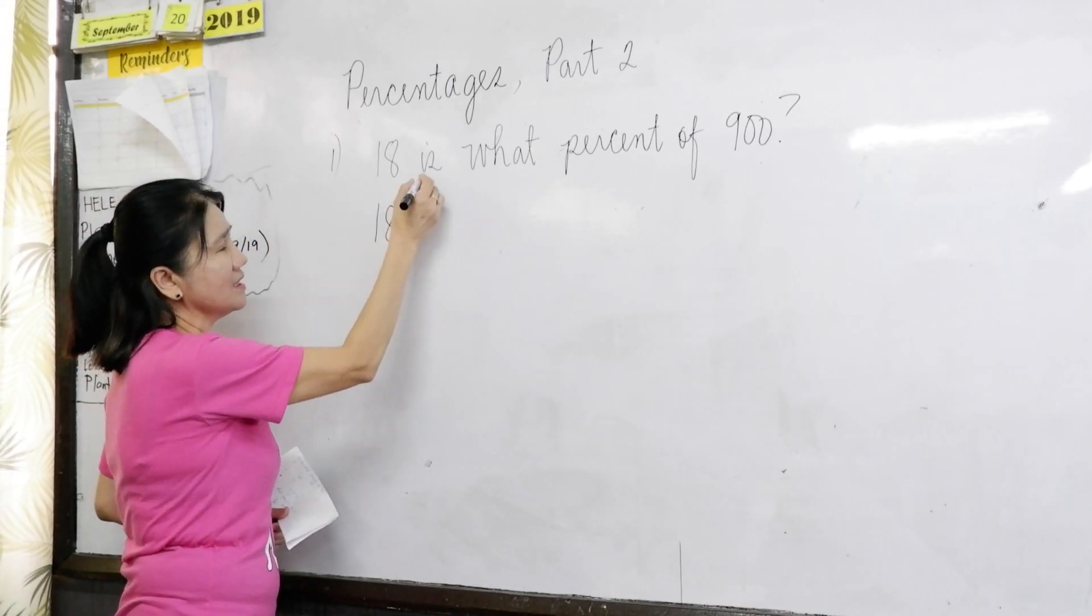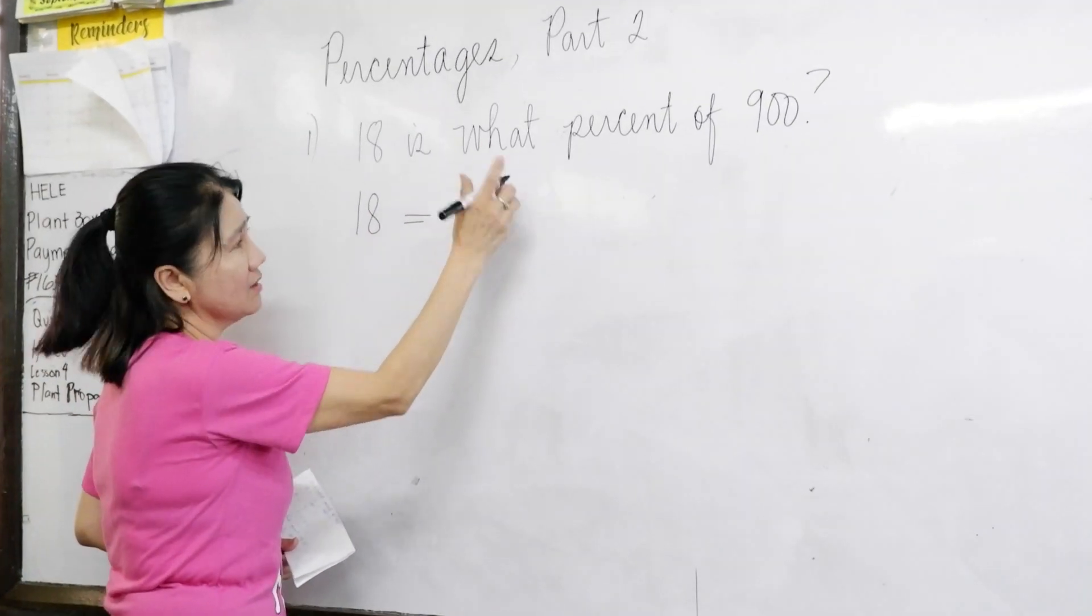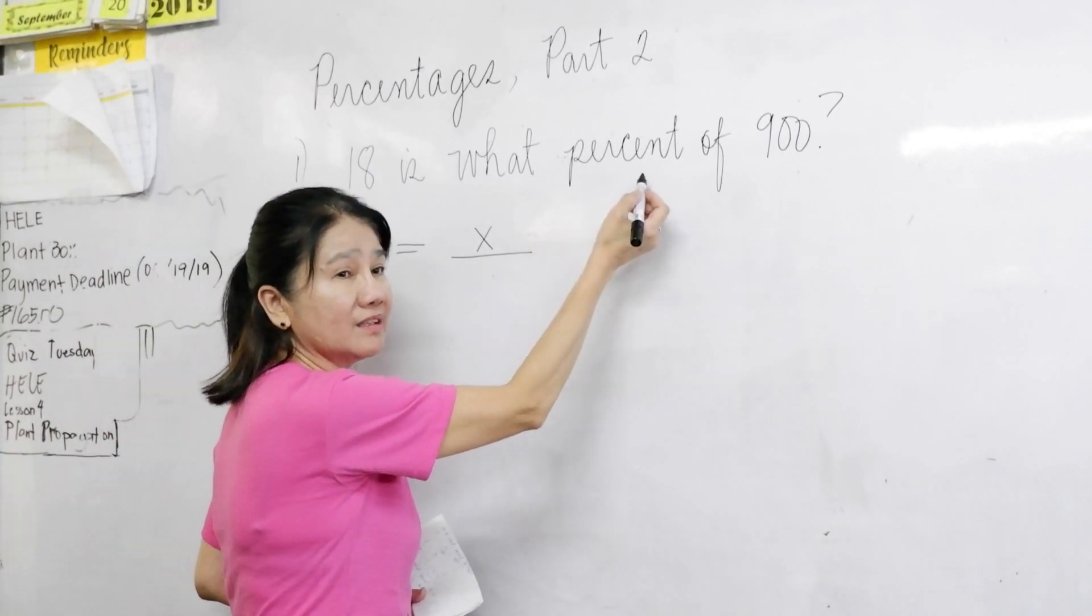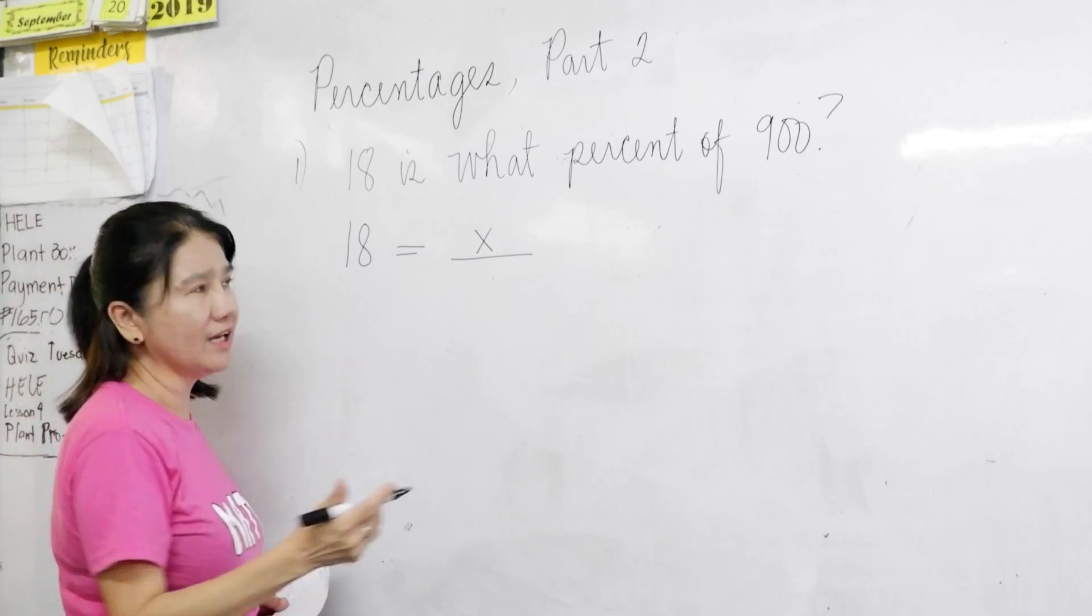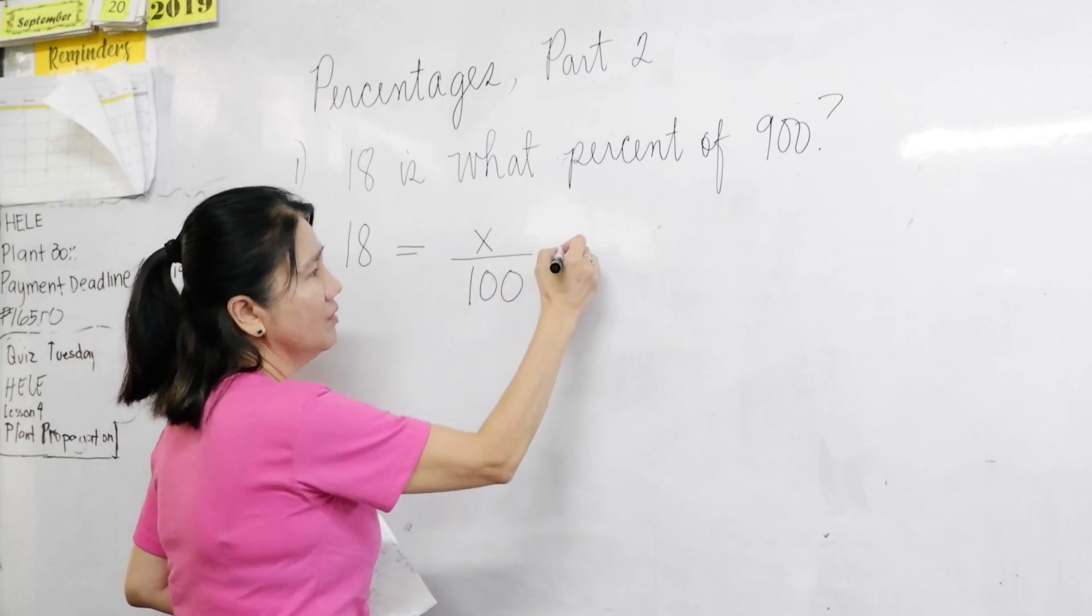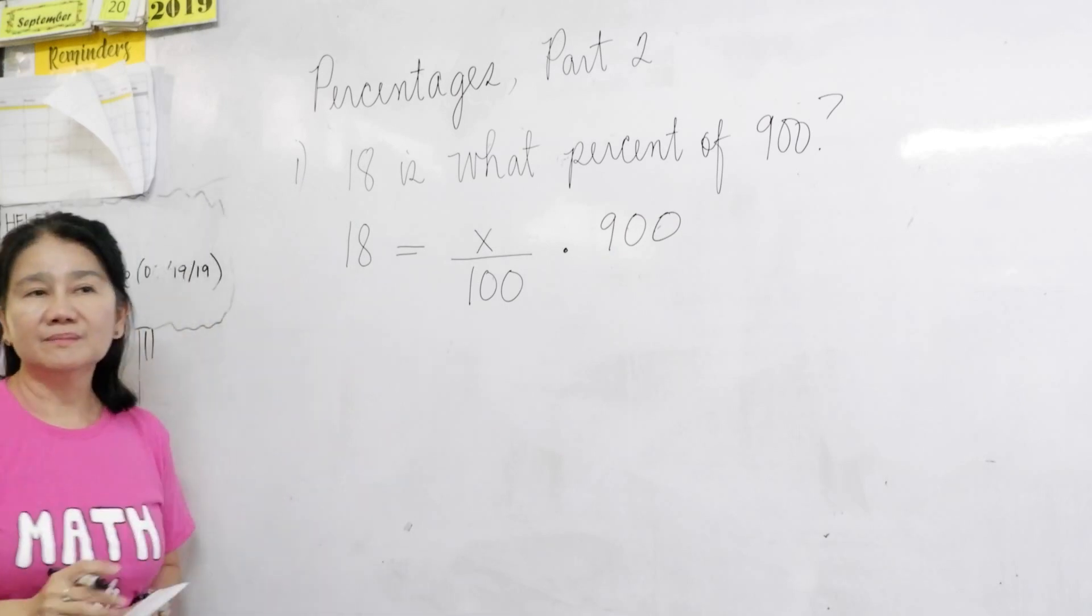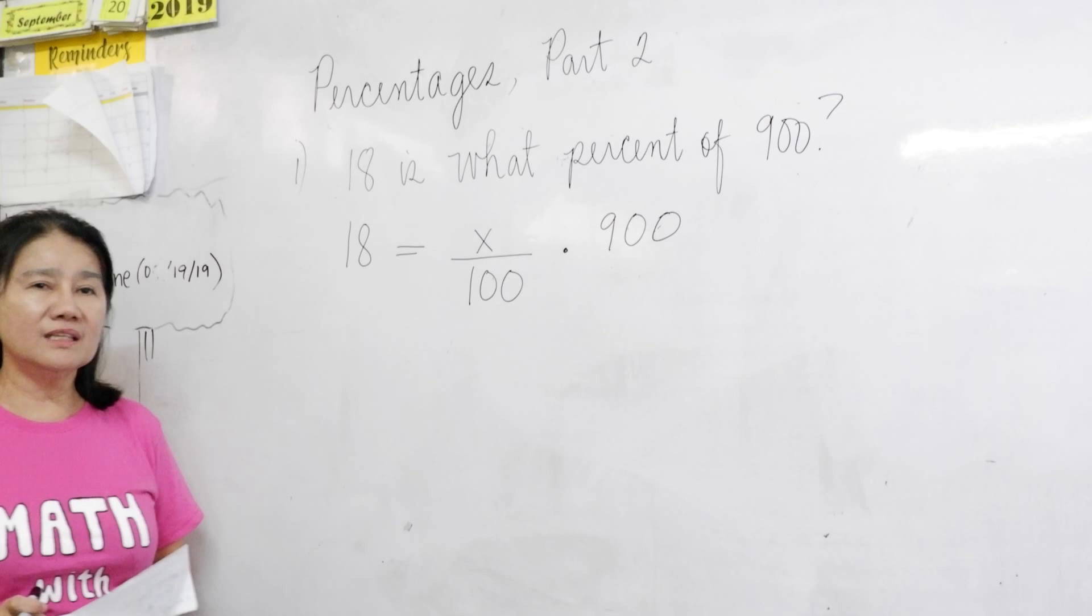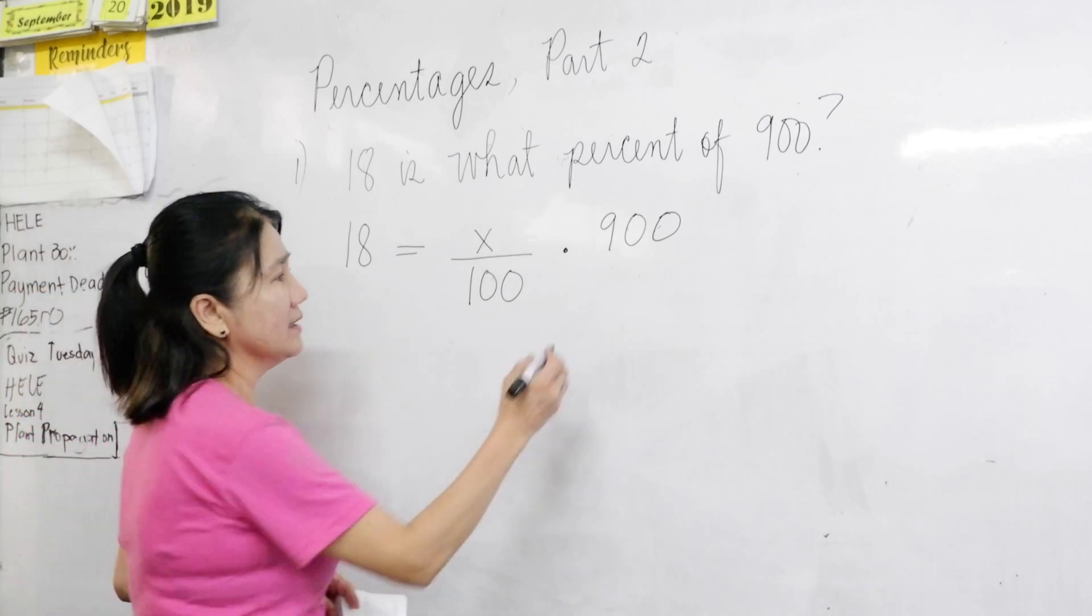18. Copy 18. Is equals what? So, it is a no. This is x. Percent. We have learned that percent is per hundred. Just like per century. Century is 100. So, per cent? Per hundred. Of? Times? Nine hundred. There. Now, what do you see? What is the denominator of 900? Gwen? One. One. Correct.